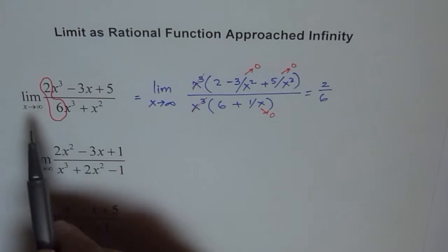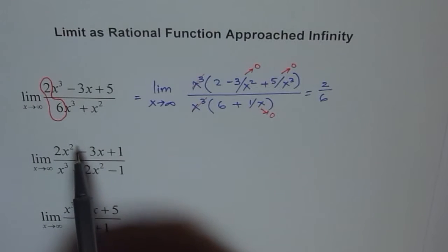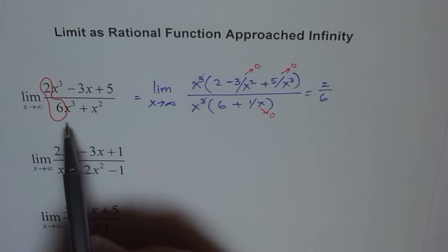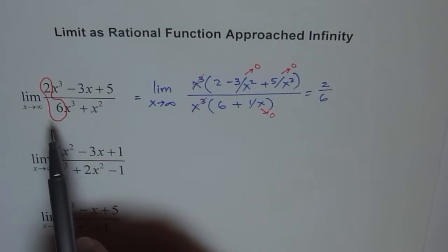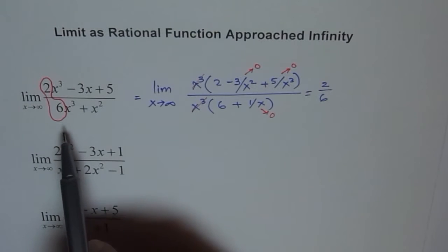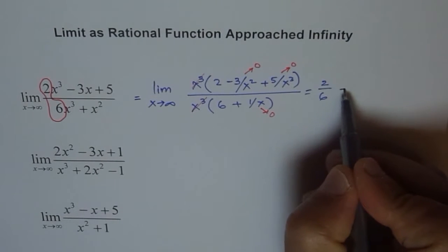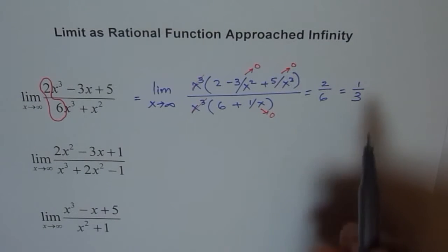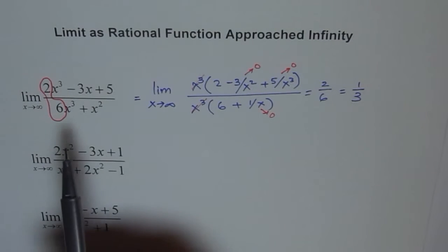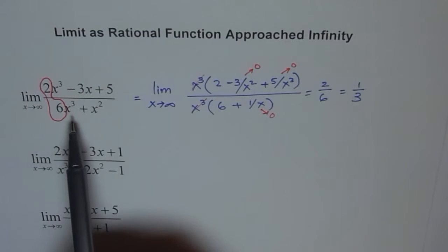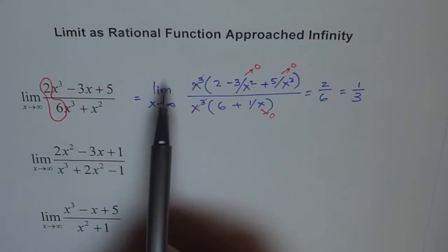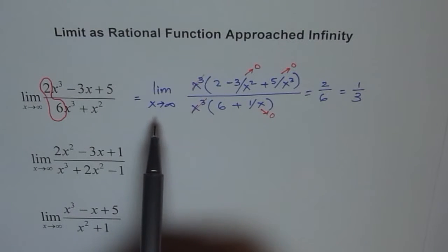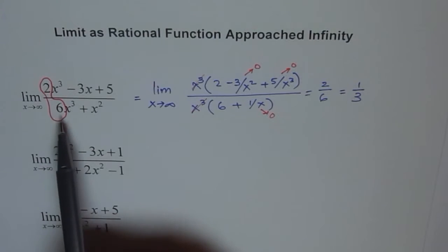Whenever you are solving such a problem where the degree of numerator and denominator is the same, the limit approaches the ratio of their leading coefficients. That is a very important conclusion. Of course, you can simplify it and write 1 over 3 as your answer. So note that if n equals m, the limit of the function is the ratio of their leading coefficients.